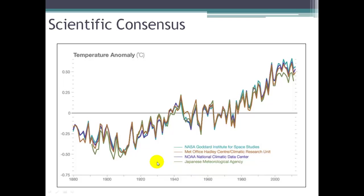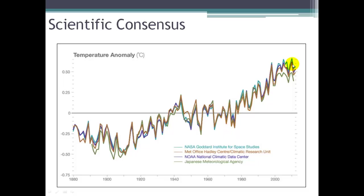The scientific consensus is clear. The vast majority — 97% of the world's climate scientists — agree that climate change is happening and is caused in large part by human activity. Temperature data going back to 1880 from various organizations around the world all show the same thing: the last 20 to 30 years have been marked by rapidly increasing temperatures.